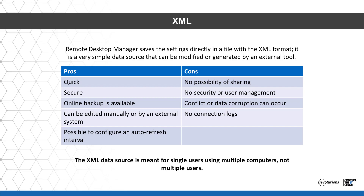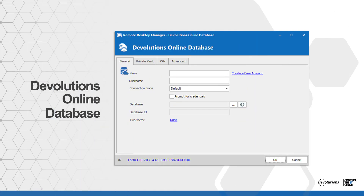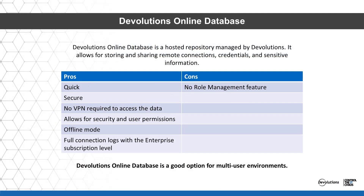Devolutions Online Database is a hosted repository managed by Devolutions. It allows for storing and sharing of remote connections, credentials, and sensitive information. It is hosted by Devolutions on Microsoft Windows Azure and Microsoft SQL Azure. The Online Database data source allows for security group and user permissions, offers full connection logs and offline mode, but it doesn't support role management. It is a good option for a multi-user environment.